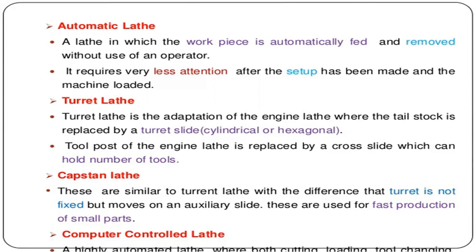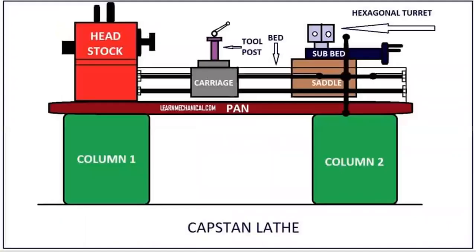The tool post of the engine lathe is replaced by a cross slide which can hold a number of tools. In the turret lathe, the tool post is replaced by a cross slide. You can see this is the capstan lathe machine.